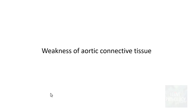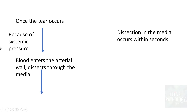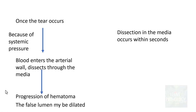If you want to remember one thing about aortic dissection, it is weakness of the aortic connective tissue, irrespective of the cause — whether spontaneous or due to inherited or acquired defects — ultimately leading to weakness of the aortic connective tissue. Once the tear occurs, because of systemic pressure, blood enters the arterial wall and dissects through the media within seconds. Once it dissects through the media, there is progression of the hematoma, and the false lumen may be dilated — which is why it was referred to as dissecting aneurysm.